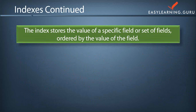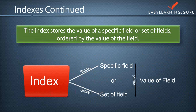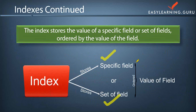The index stores the value of a specific field or set of fields, ordered by the value of the data. There are two parts to an index: an index can be on a specific field — say for example an employee collection — or a set of fields, such as the employee ID. Or it can be applied on multiple fields, both the ID and the name of the employee. They are ordered in ascending or descending order as specified in the query: that is 1 for ascending order or -1 for descending order. Indexes can be either on a specific field or on a set of fields, or applied on multiple fields altogether.